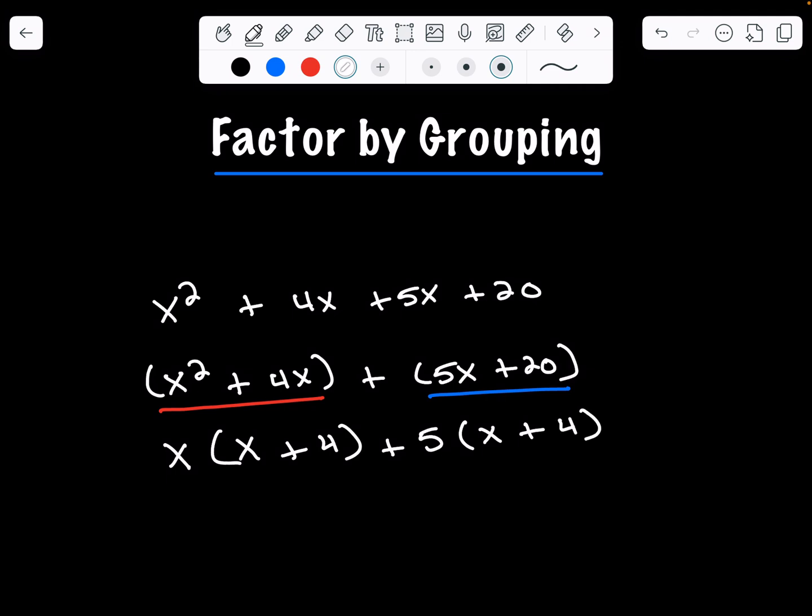This is a really good stopping point. If at this point we do not have the exact same expressions here, so we have (x + 4) and (x + 4), we know that we have done something wrong. We know that we're on the right track because both of those are the same.